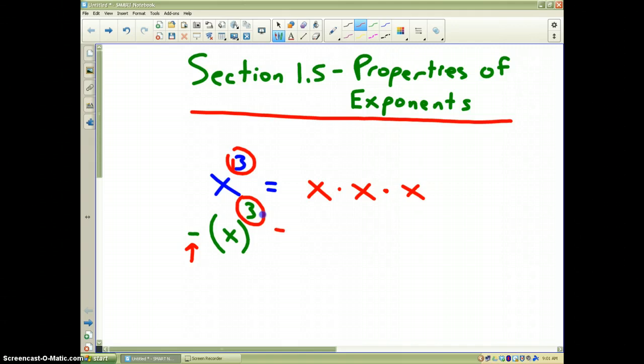the 3 does not apply to the negative sign. So if I was to expand this out, the 3 only applies to the x. So I would have the 3 x's that are multiplied together, and then the negative sign, since it's outside the parentheses, there is only one of them. And so this would be the expanded out answer.